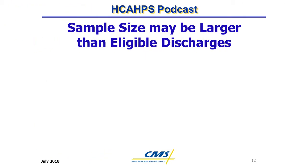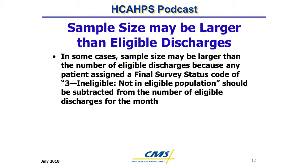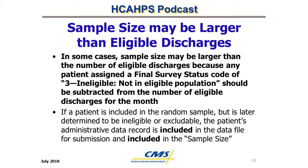Sample Size May Be Larger Than Eligible Discharges. In some months, the sample size may be larger than the number of eligible discharges. This occurs when a patient is determined to be ineligible or excludable post-sampling and is assigned a final survey status code of 3 (ineligible, not-ineligible population). These patients must be subtracted from the number of eligible discharges for the month, but their administrative data records should still be included in the data file submitted to the CMS Data Warehouse. These patients are retained in the count of the sample size field.